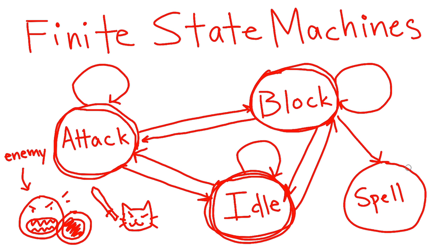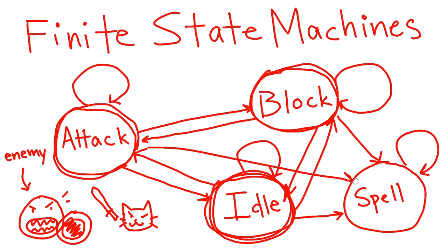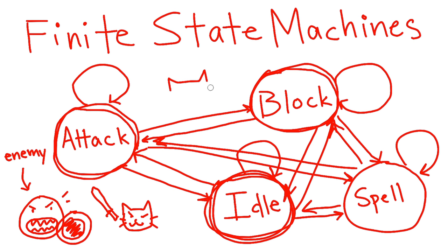This gets especially messy if we want to add new states or new actions like 'use potion' or 'cast spell' — we have to update the arrows for every possible transition. If you have an enemy AI that just attacks, defends, and does nothing, like our example, a state machine will probably do fine.